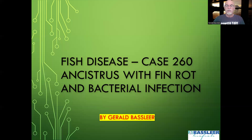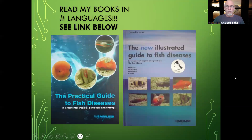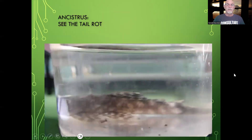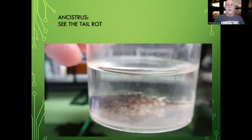Here is the Ancistrus with fin rot and bacterial infection. You can find out more details on fish diseases — also on other catfish, other Loricariidae, or other Ancistrus, Hypancistrus, or Baryancistrus species — in my books on fish diseases, available at the link below. I'm a consultant in the fish industry, and that's why I obtain a lot of information and see a lot of fish disease problems, like on this Ancistrus with this bad tail rot.